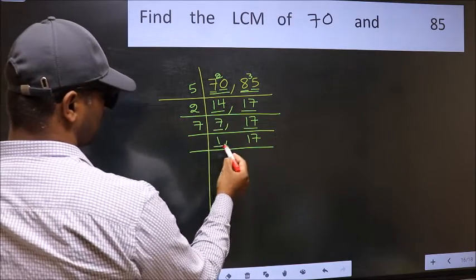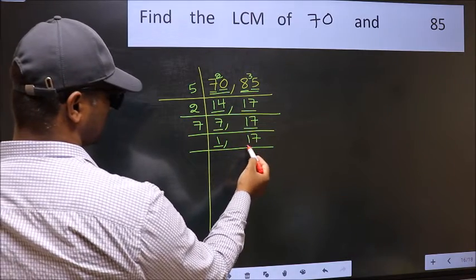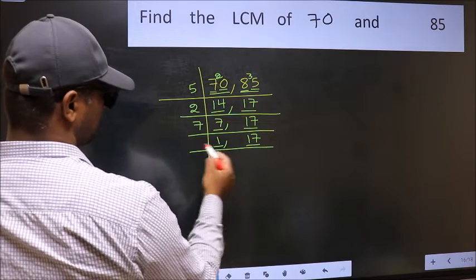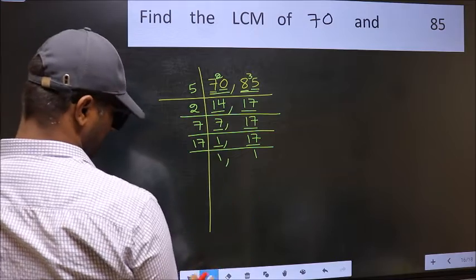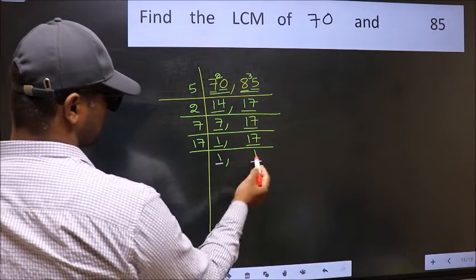Now we got 1 here, so focus on the next number, 17. 17 is a prime number, so 17 once is 17. We got 1 in both places.